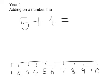Here's 5 on the number line. And you need to make 4 jumps. So, jump from 5, 4 times: 1, 2, 3, 4.